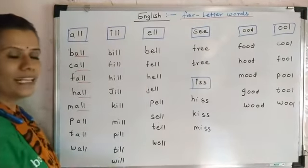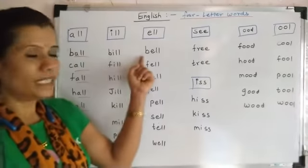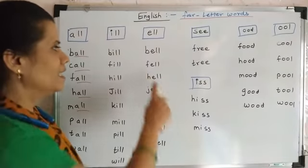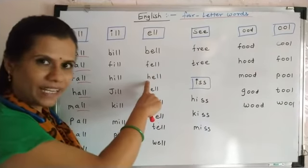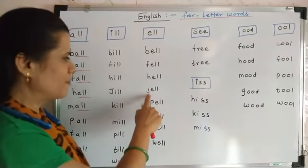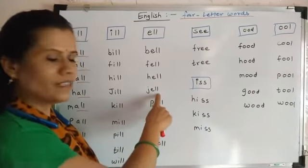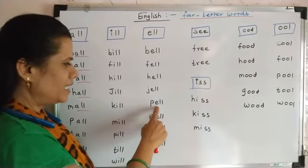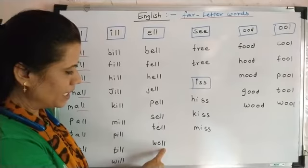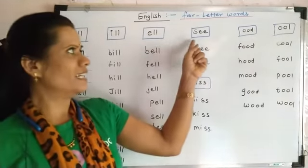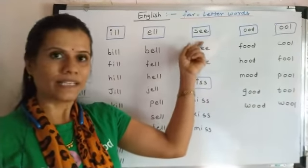E double L — ell. B E double L — bell. F E double L — fell. H E double L — hell. J E double L — jell. P E double L — pell. S E double L — sell. T E double L — tell. W E double L — well.